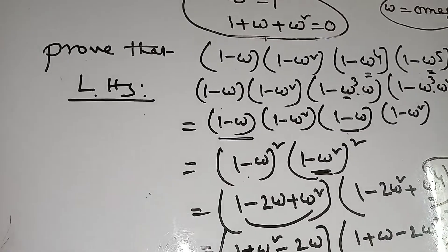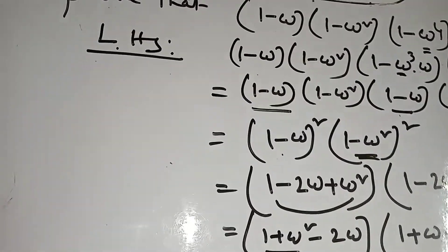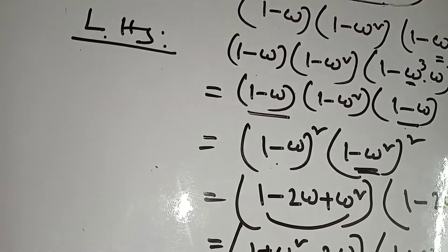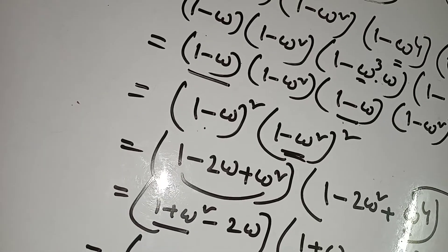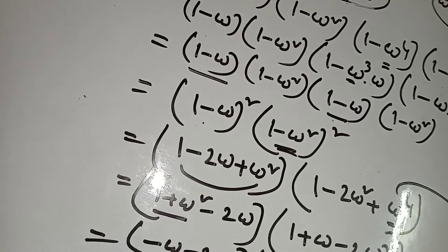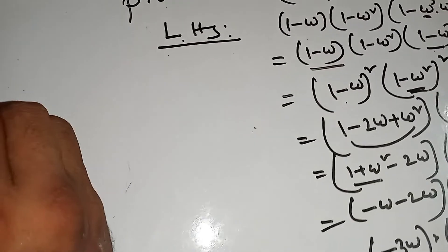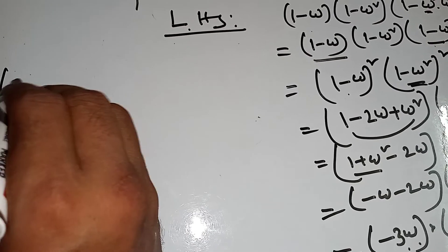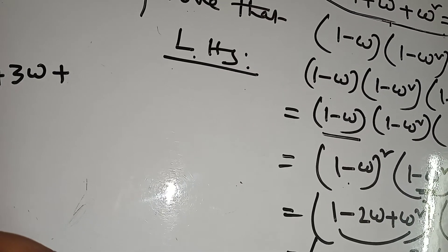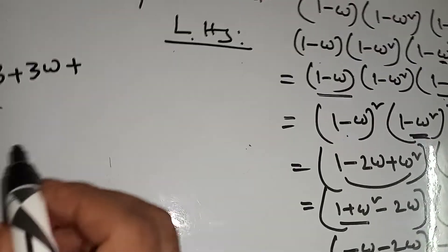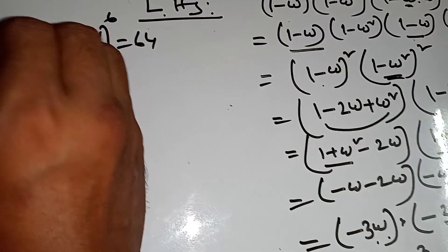That means omega cube equal to 1 and 1 plus omega plus omega square equal to 0. This is the main formula of complex numbers. Next, another important example: prove that (3 plus 3 omega plus 5 omega square) to the power 6 equals 64.